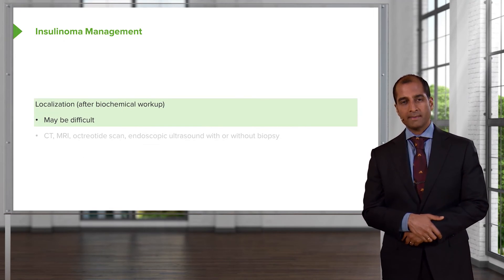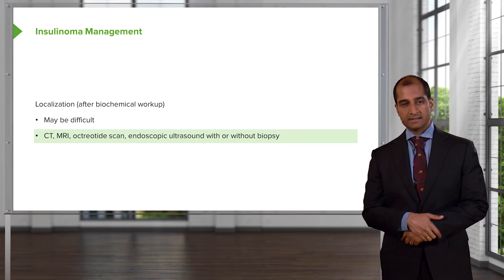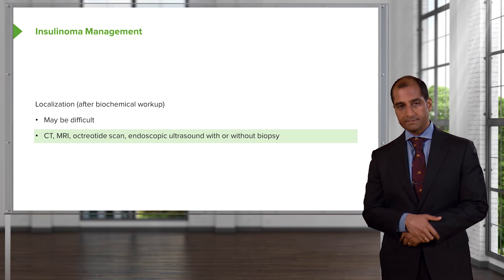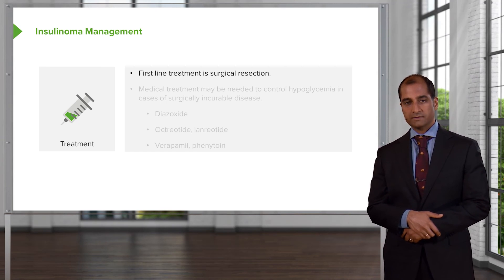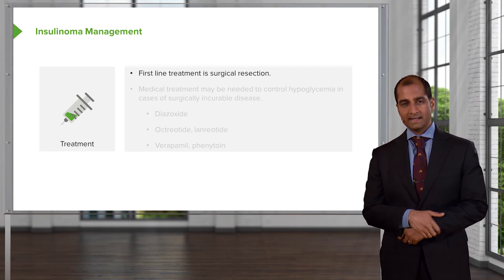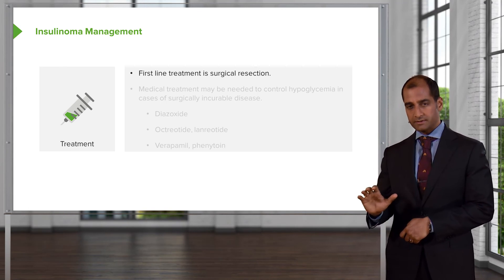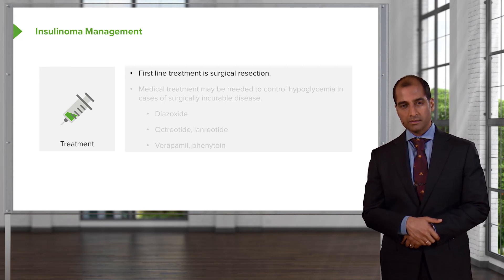Let's continue with pancreatic islet cell tumor — insulinoma management. It may be difficult. Localization after biochemical workup via imaging: CT, MRI, octreotide scan, endoscopic ultrasound with or without biopsy. First-line treatment is surgical resection — you must take it out for final cure. Remember, with Whipple Triad: when there is severe hypoglycemia, give the patient glucose.